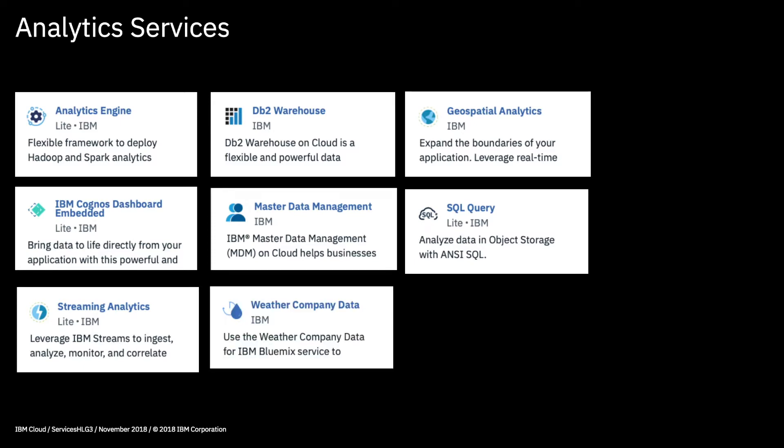Then we have the Weather Company Data. The Weather Company is an IBM company, and through a series of APIs you can add weather data to your applications — either historical weather, current weather, or forecast weather. This is really powerful because it means you can build applications that take weather into account. For example, you can use it to predict buying trends and perhaps buy stock or create offers based on that. Or if you're responsible for maintenance planning for remote electricity networks, weather data can help you plan where to deploy resources better when bad weather is forecast.